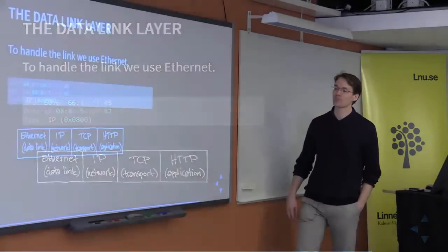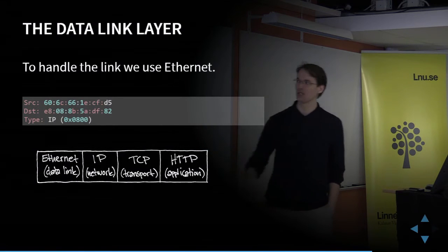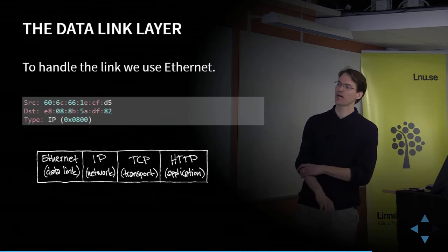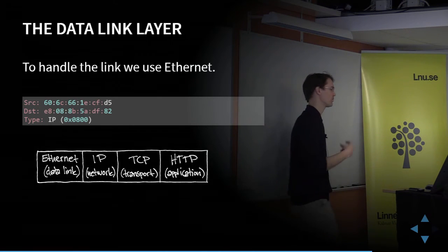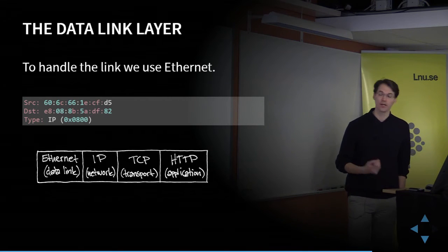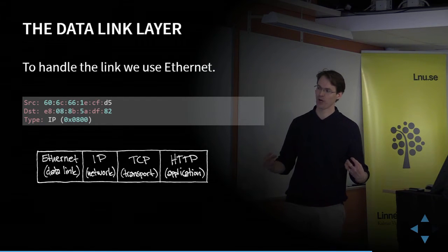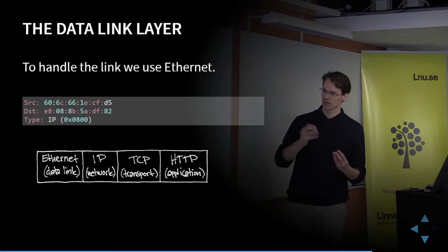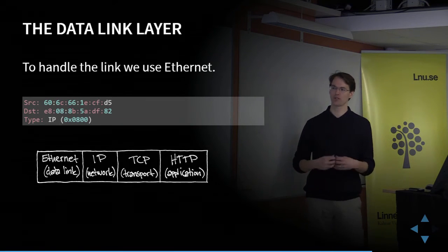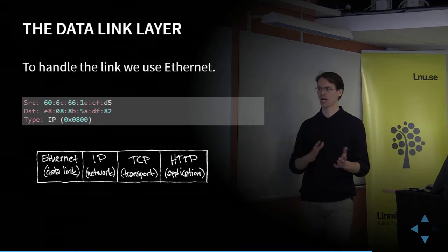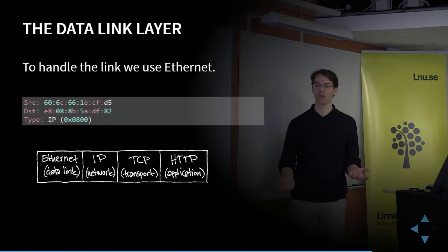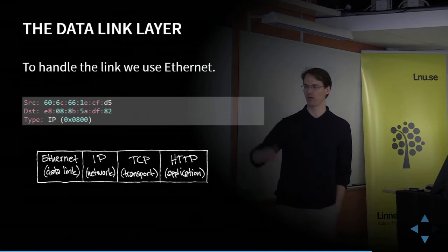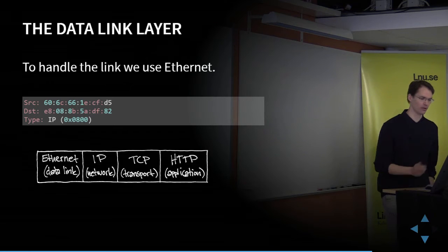Now we go down to the data link layer. In this case, Ethernet is used on the link. The Ethernet header contains the source MAC address of my computer and the destination MAC address of the first gateway out of my network. It also specifies the encapsulated protocol — IP. So Ethernet tells the receiver there's an IP header next; IP says there's a TCP header next; TCP says send it to this port; and the listener at that port speaks HTTP.